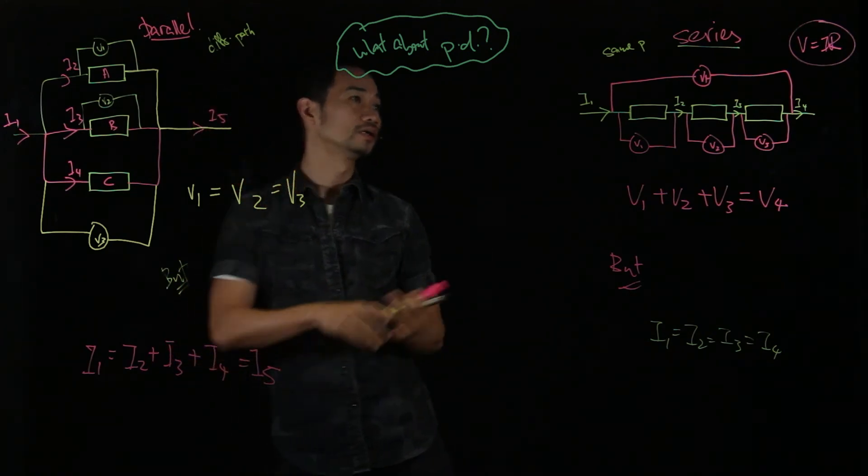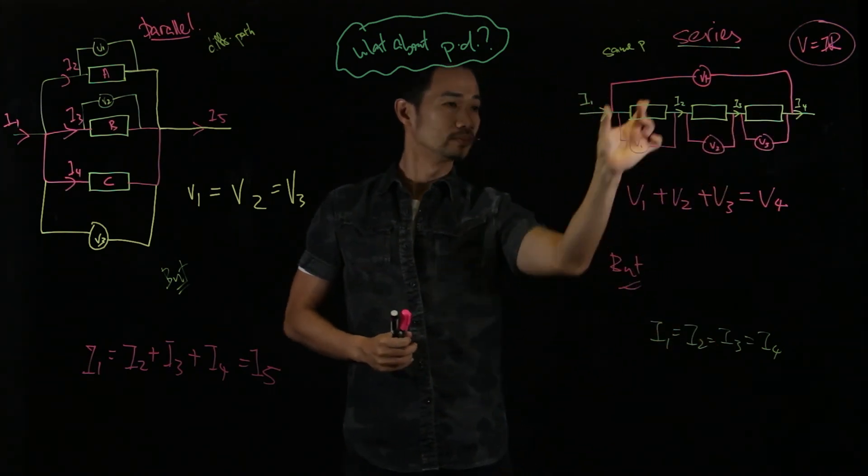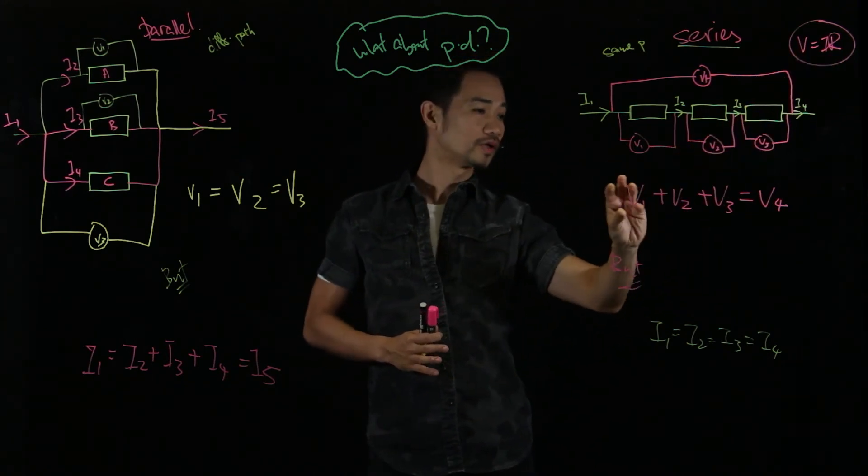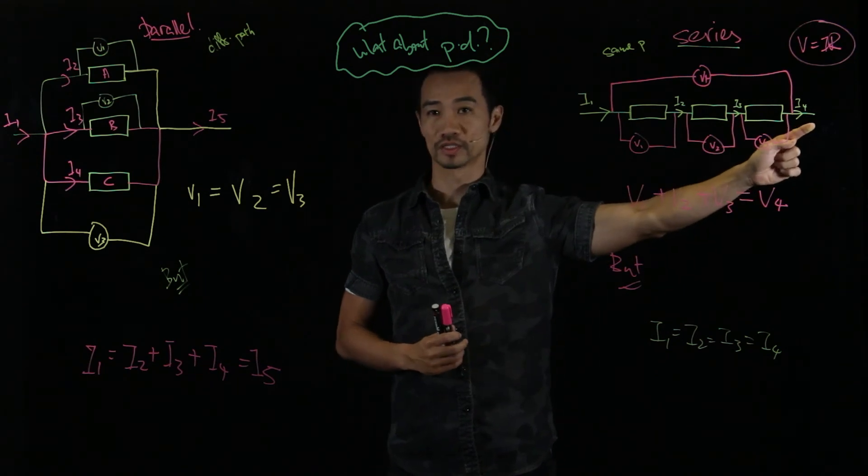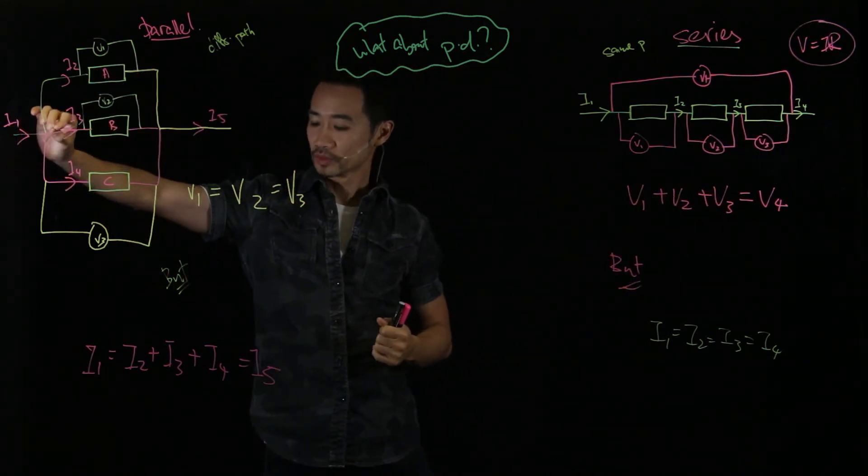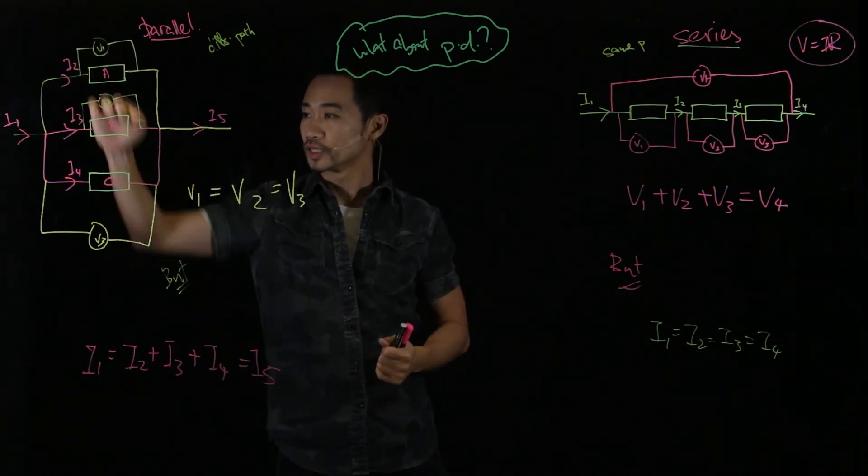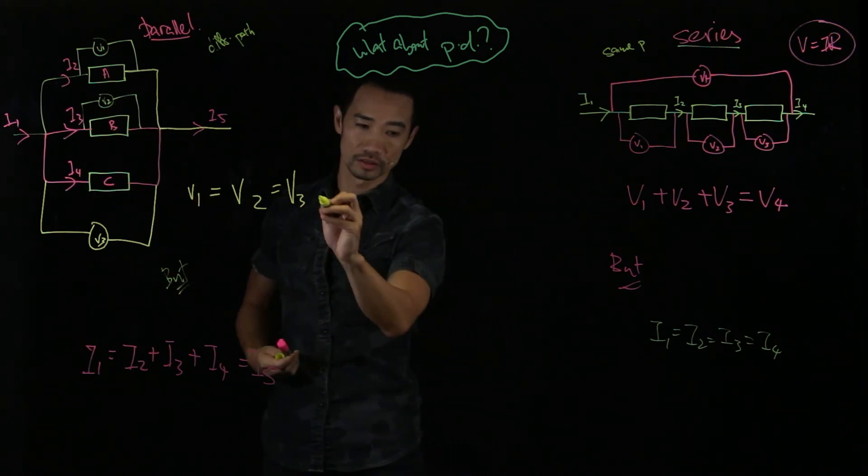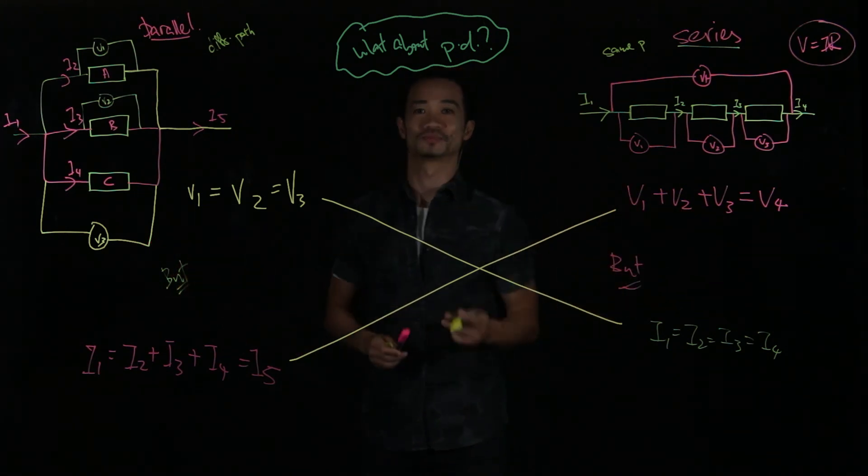So you see over here, you see the contrast. Series, current goes through is the same, but potential difference is dependent on the resistors. And all of them add together will give you the overall potential difference across everything. Whereas in parallel, when they hit a junction, the current splits up, but they will all come back to be the same. Yet, potential difference across each of them is actually the same. So do you see the parallel between this? See you next time.